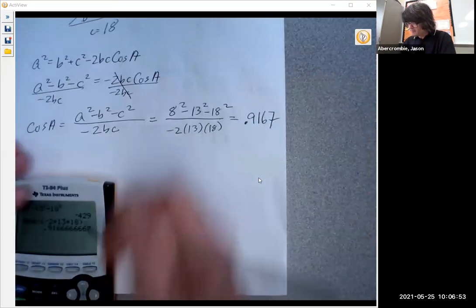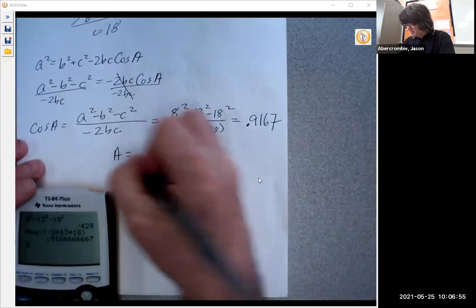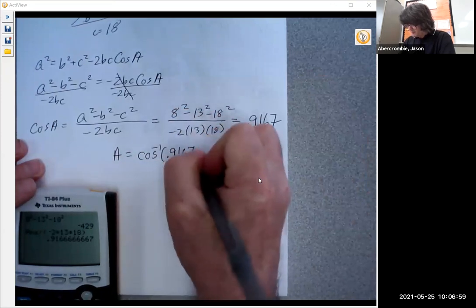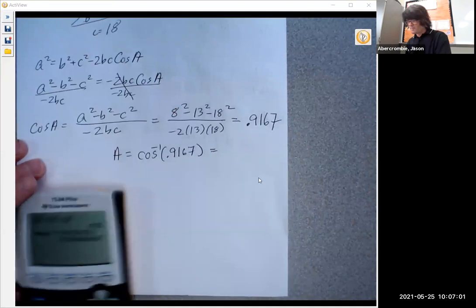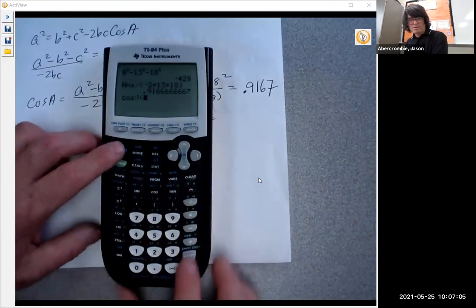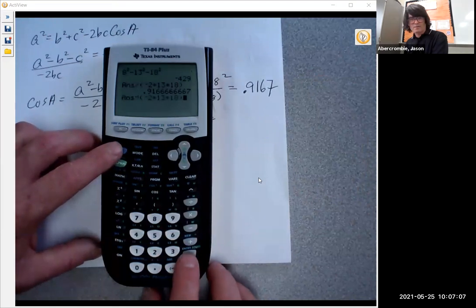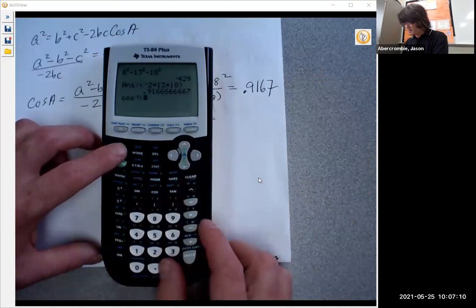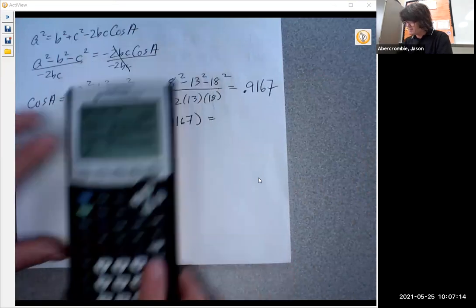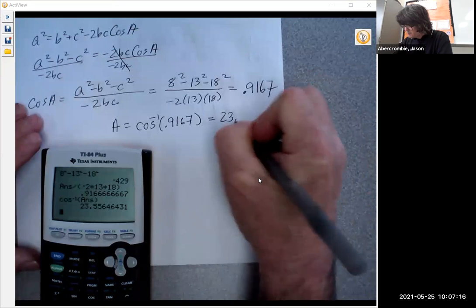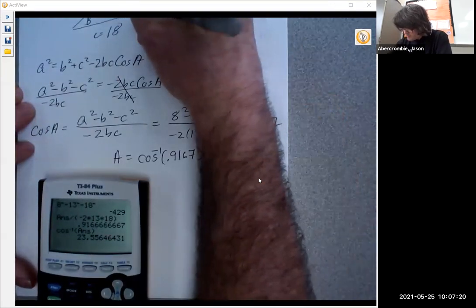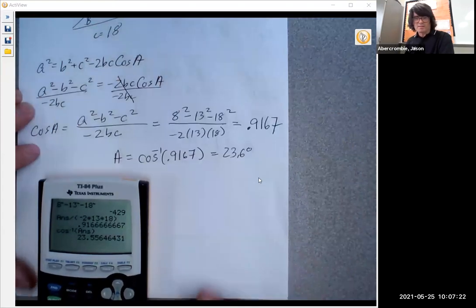And then to get angle A, that is inverse cosine of 0.9167. So I'll do second cosine, and then I'll just do second entry, sorry, inverse cosine, second answer. And that will be 23.6. So now we know this is 23.6 degrees up there.